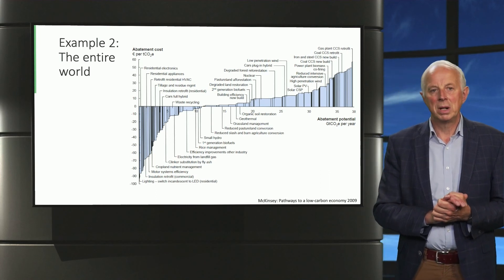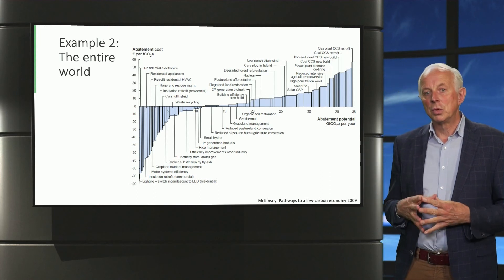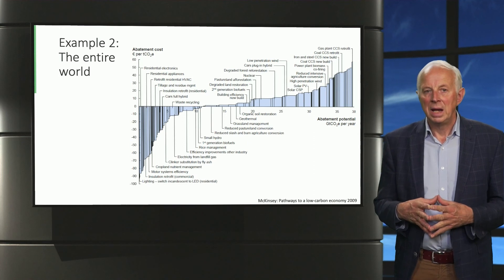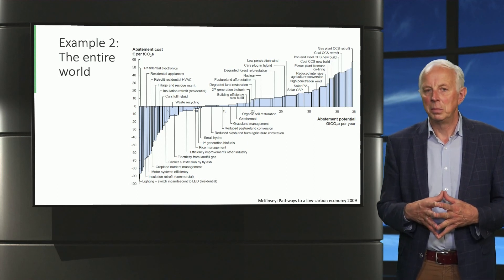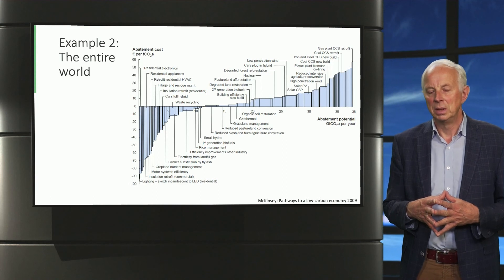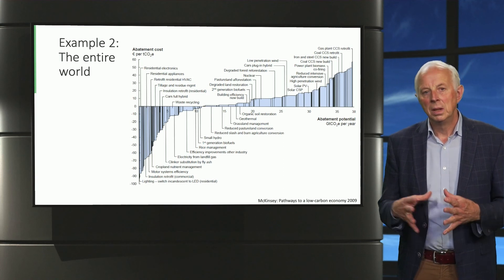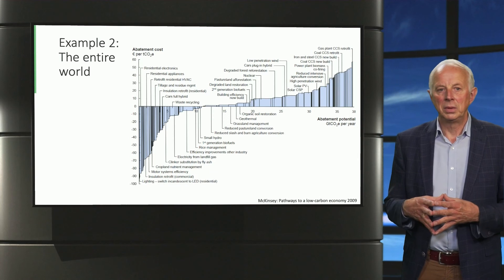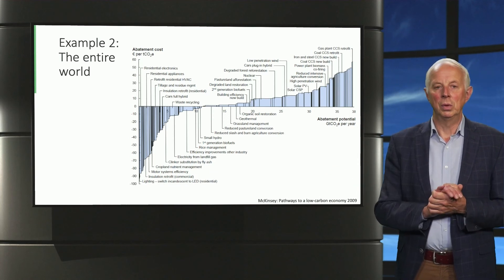Thus, to summarize, the marginal abatement cost curve is a very simple and attractive tool to visualize what can be done about greenhouse gas emission reduction, whether it is a small company, a municipality, a country or, as you see here, even the entire world.